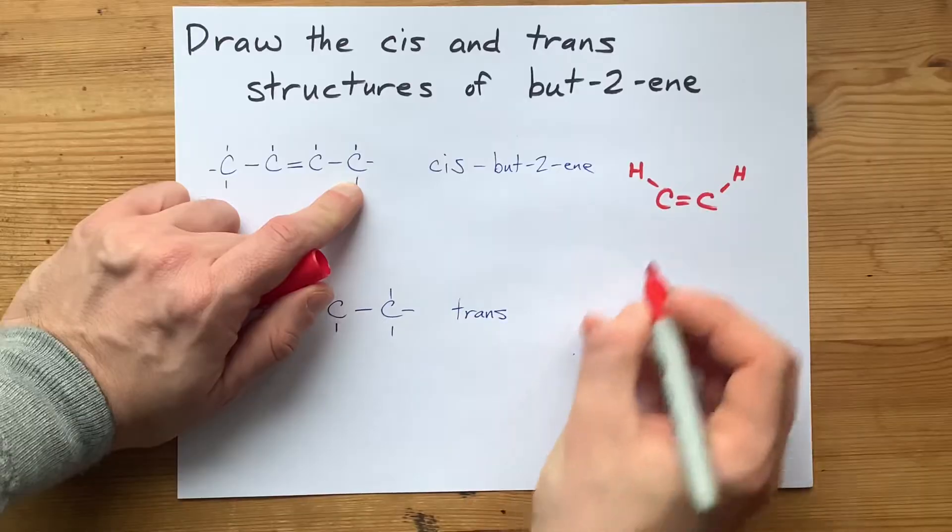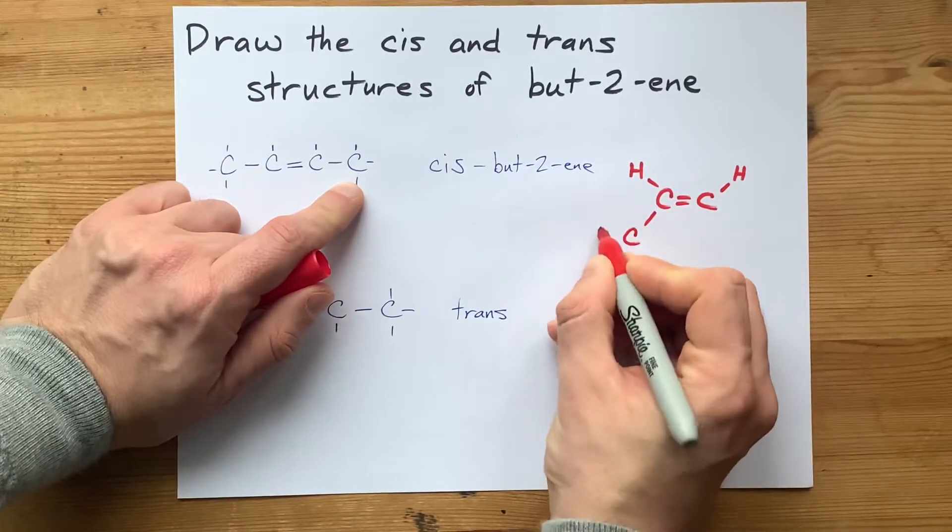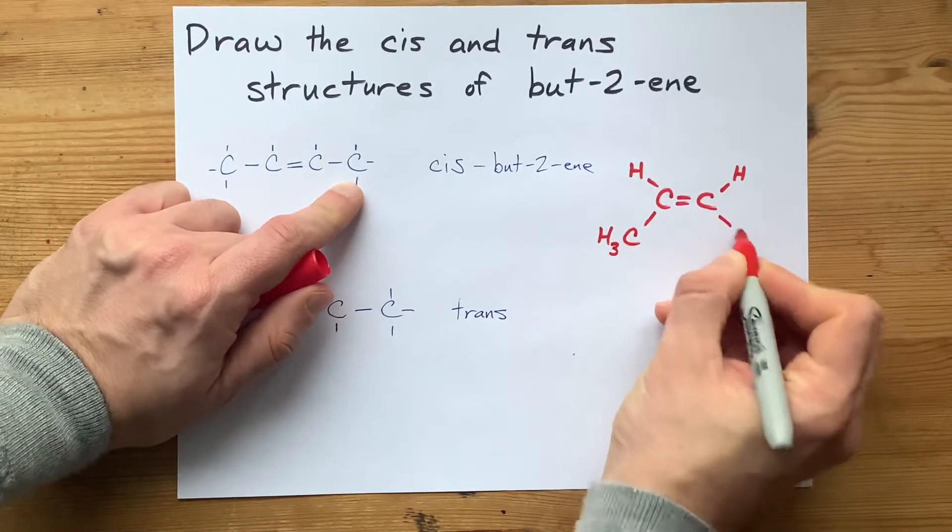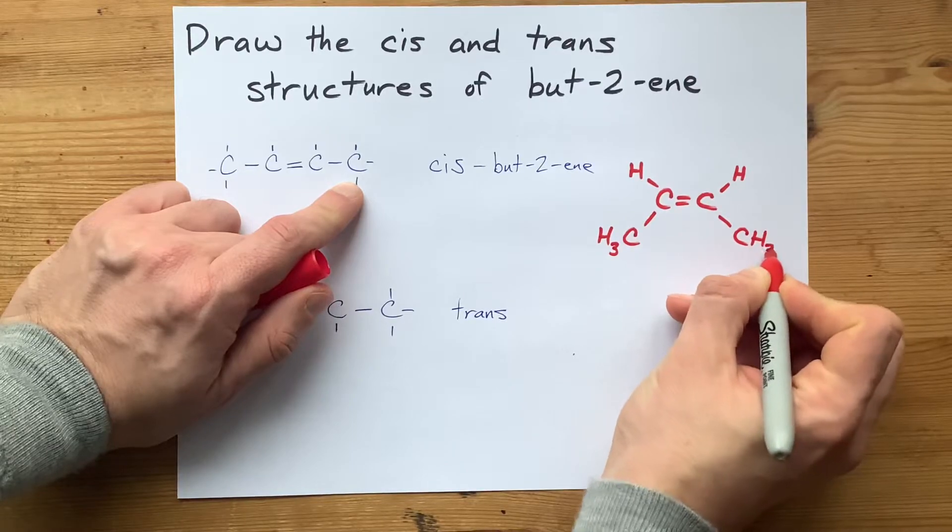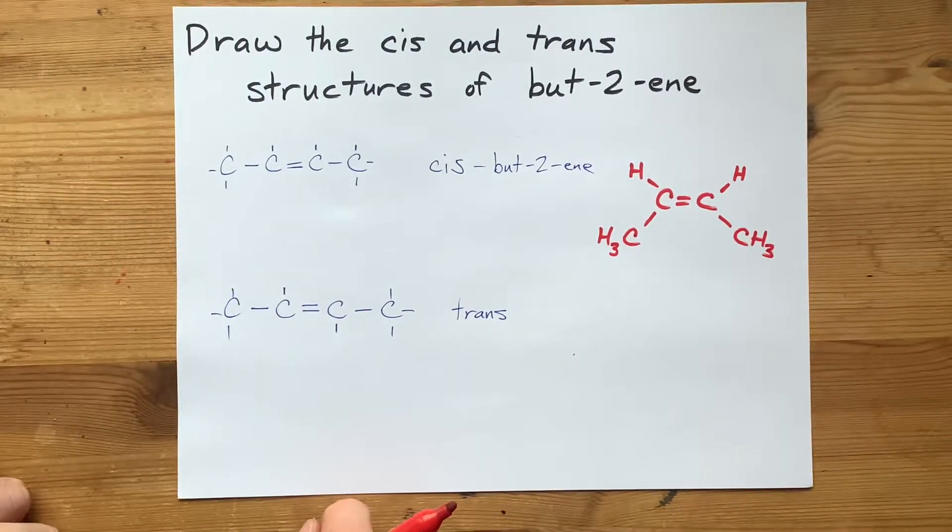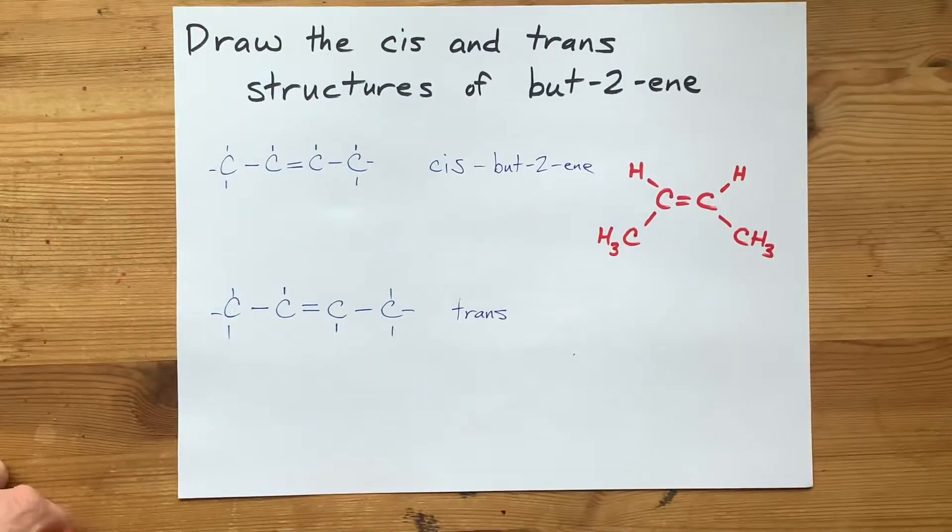Cis, same side. And the CH3 groups, actually, both also end up on the opposite, or same side as each other, but opposite from the hydrogens.